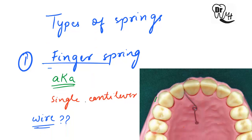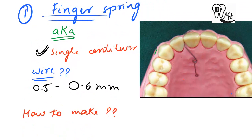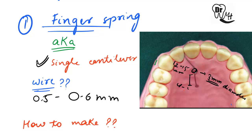Now we'll proceed to the types of springs. The first one is the finger spring, also known as a single cantilever spring. The wire used here is 0.5 or 0.6 mm. Looking at this diagram, the free end — which is the active arm — is 12 to 15 mm in length and spaced towards the tissue. The helix has a 3 mm internal diameter, and the retentive arm is 4 to 5 mm in length.